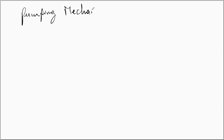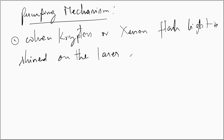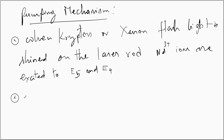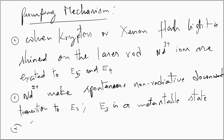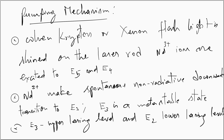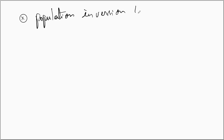Now we shall look at the pumping mechanism. When the xenon or krypton flash lamp is turned on, Nd3+ ions are excited to the upper energy levels E4 and E5. From these energy levels they make a non-radiative spontaneous downward transition to E3, which is a metastable state. Thereby E3 becomes the upper lasing level and E2 is the lower lasing level, and population inversion between E3 and E2 is achieved.